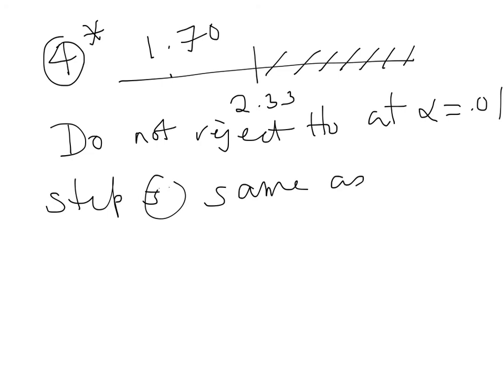Step 5 will be same as before. So you see that this is how we do the rejection region approach. Note that the result you got from p-value approach will be same as rejection region approach.